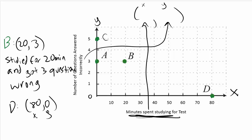One more time: even without the graph, you can use the 'X changes Y' rule. 'The minutes spent studying for a test changes the number of questions you get incorrect.' Reading it the other way, 'the number of questions answered incorrectly does not change how much you spent studying' — you've already studied at that point. So minutes studying is X, and questions incorrect is Y.